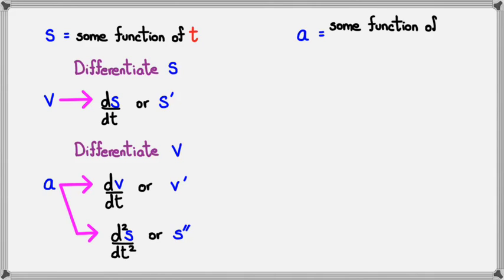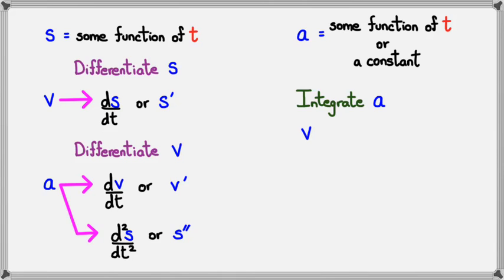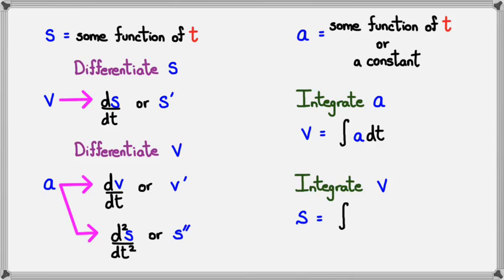Acceleration can be a function of T or just a constant. If we integrate acceleration, we get velocity: V equals the integral of A with respect to dt. And when you integrate velocity, you get the distance formula: S equals the integral of V dt. So differentiating distance gives velocity, differentiating velocity gives acceleration, and integrating goes in reverse.